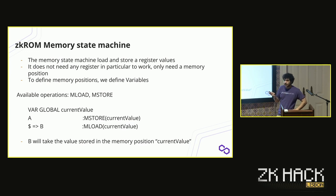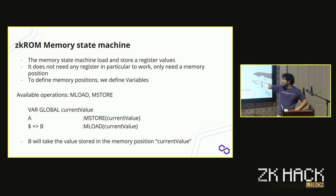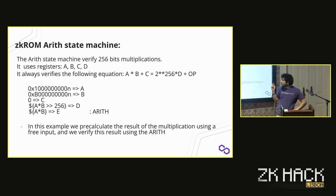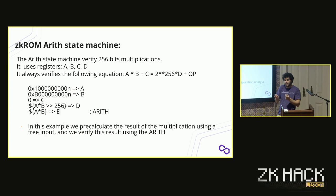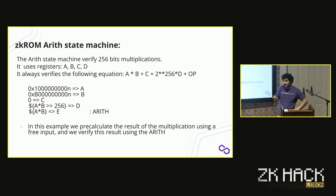Another state machine we use a lot is the memory one, which allows us to load and store register values. It doesn't need specific registers like binary needs A and B - it just needs a variable. You can store and load values using the same variable. We also have a keccak state machine, a Poseidon state machine, and others. If you understand the behavior of these ones and that you must always use the same registers, the others are more or less straightforward.